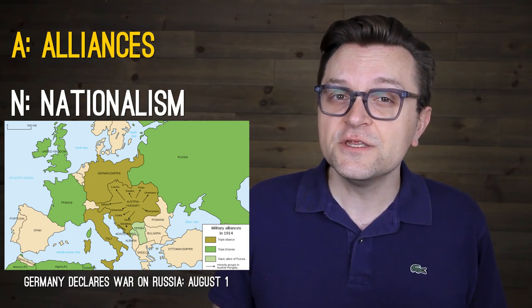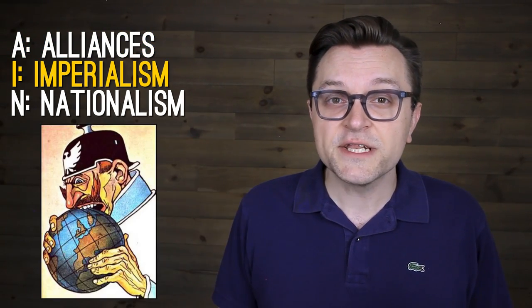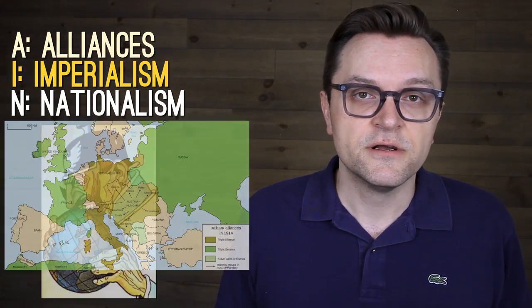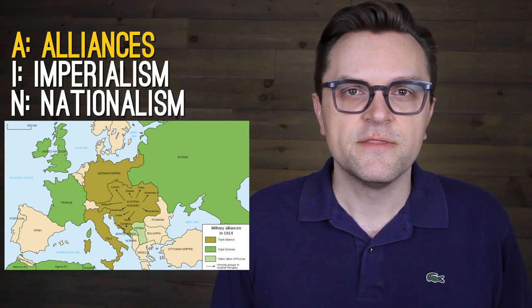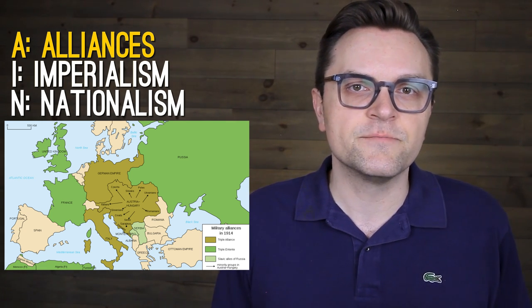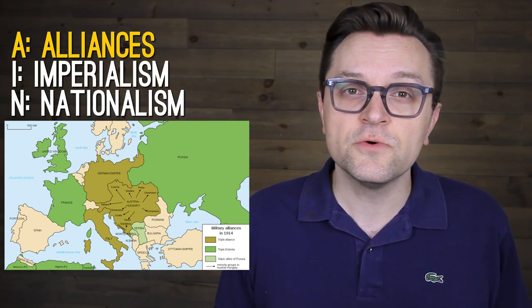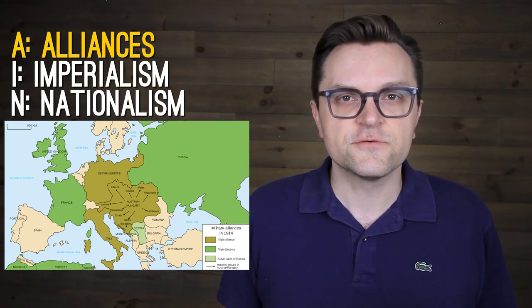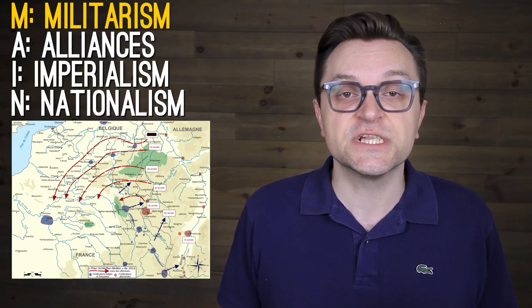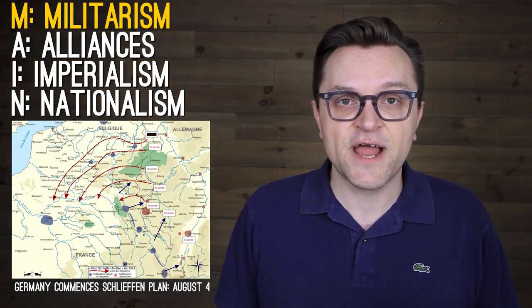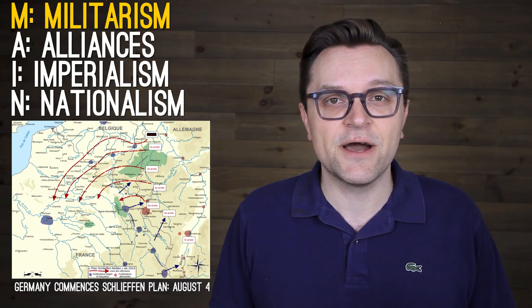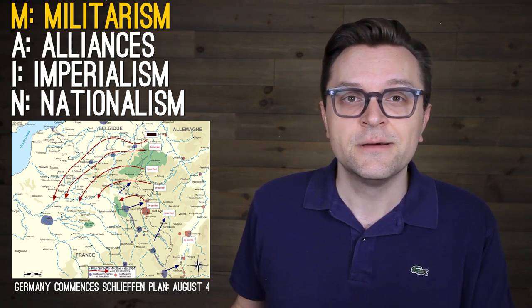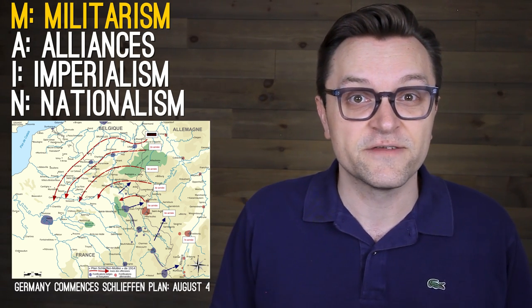Germany, a relatively new great power on the scene, wanted to expand their empire and saw war as a means to do it. Russia, however, was in their own alliance — the Triple Entente with France and Britain — and so Germany knew that war with Russia also likely meant war with France and Britain. So Germany commenced their pre-emptive Schlieffen Plan by attacking France, ideally taking them out as quickly as possible before refocusing on Russia before they would be able to mobilize their entire fighting force.